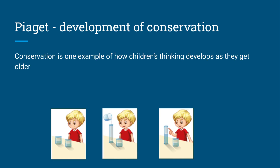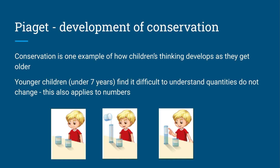Piaget's development of conservation: conservation is an example of how children's thinking develops as they get older. That's one of Piaget's main ideas — as a child gets older, their thinking, their cognition, becomes more sophisticated. Younger children, and Piaget said this was children under seven, find it really difficult to understand that quantities do not change.